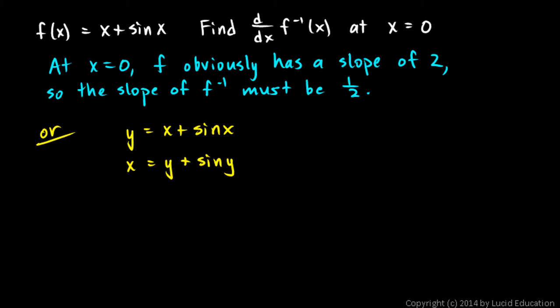I'm going to differentiate both sides with respect to x. So the left side, I just get 1. On the right side, I'll differentiate term by term. And that's y prime plus the derivative of sine here is cosine. So this is cosine y times y prime by the chain rule. Now we need to solve this for y prime.